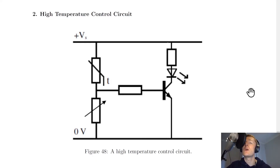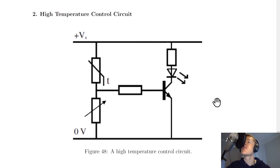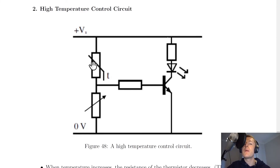The second type is the high temperature control circuit. We're going to look at what happens when temperature increases. The only difference from the low temperature circuit is that we've swapped the positions of the thermistor and the variable resistor — the thermistor is now the upper component and the variable resistor is the lower component. When temperature increases, the resistance of the thermistor decreases — again using the TURD rule: temperature up, resistance down.